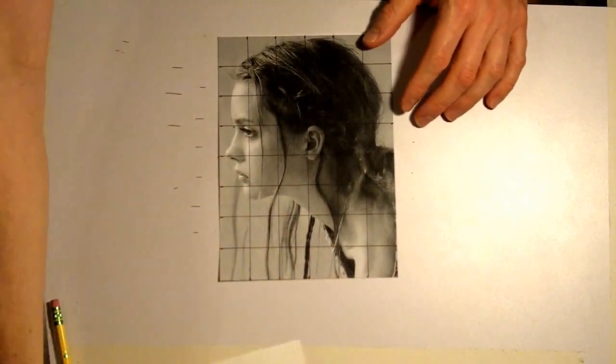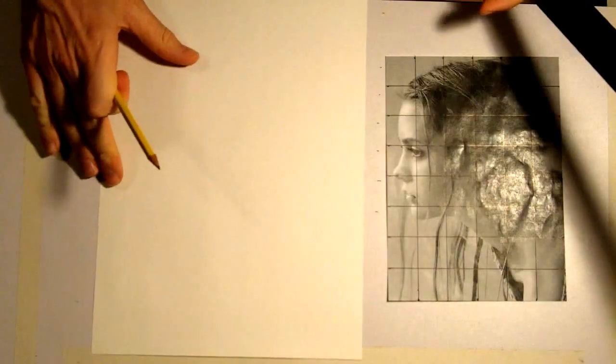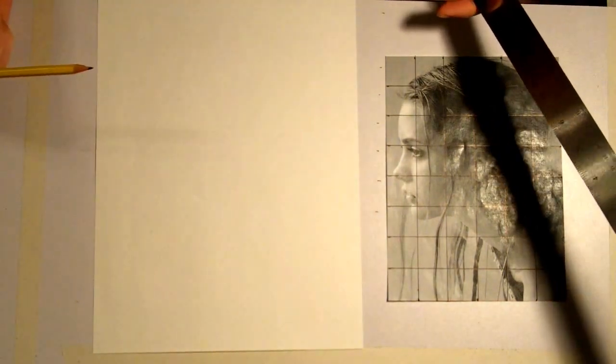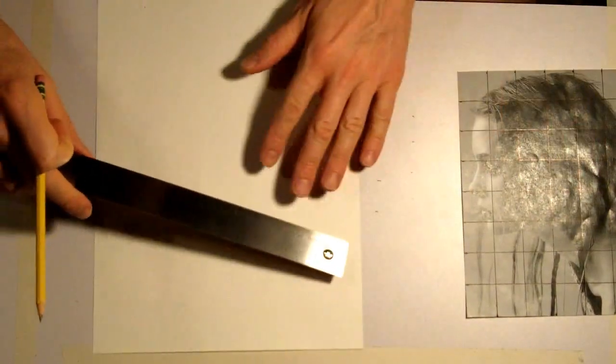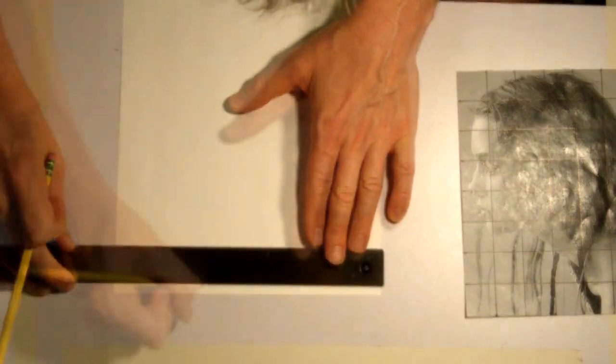Now what I'm going to do is create the exact same number of boxes on my drawing paper. In order for this ratio to work with my 9 by 12 drawing paper, I'm going to make a one and a half inch grid. I'm going to do the exact same thing, only I'm going to measure and make a mark every one and a half inches.